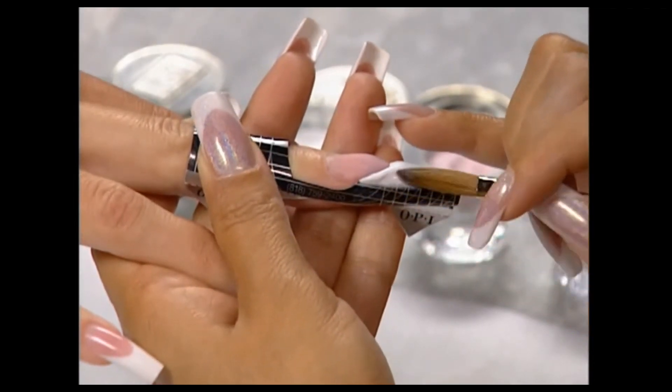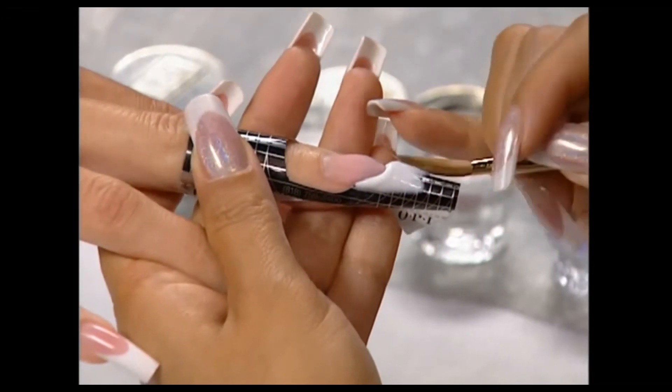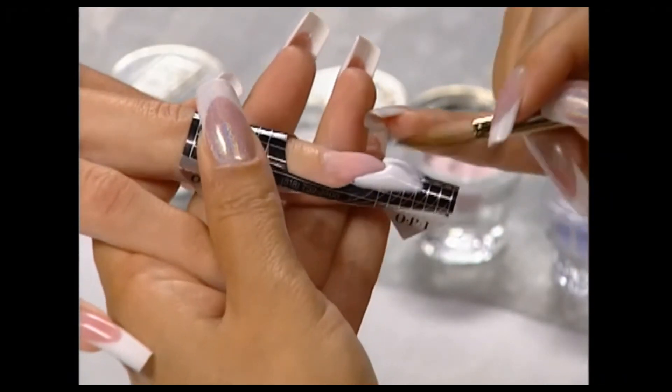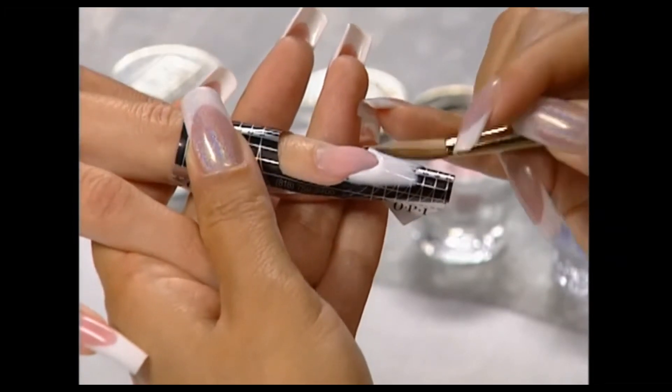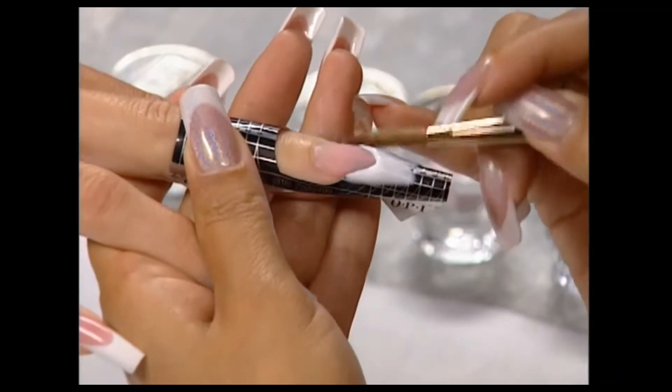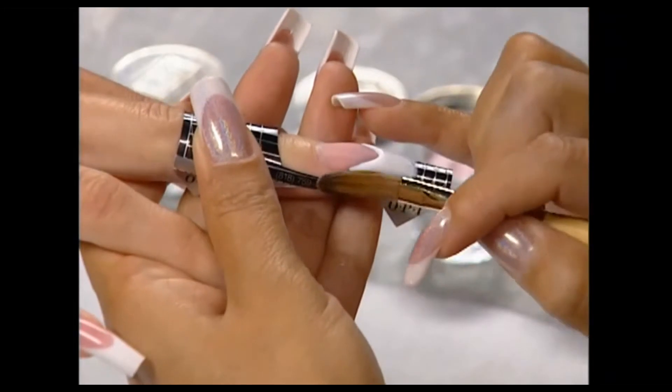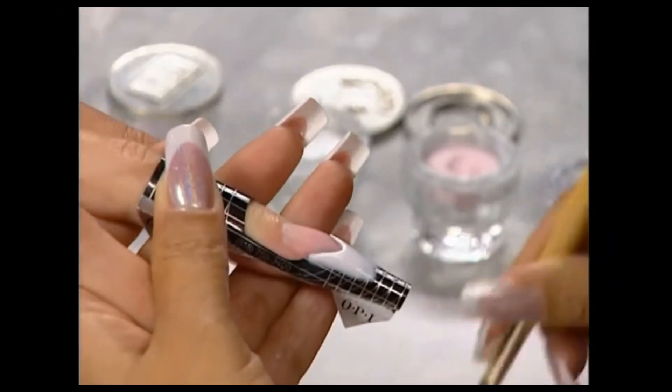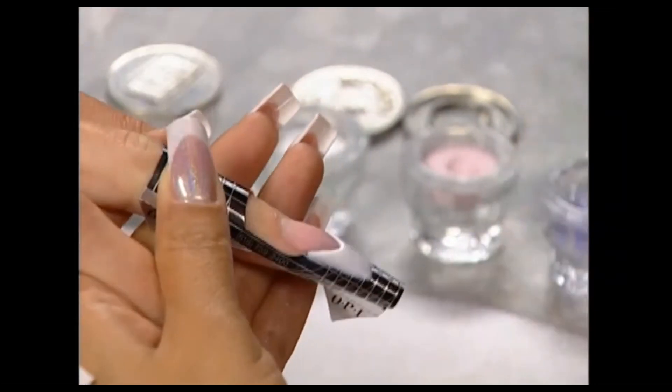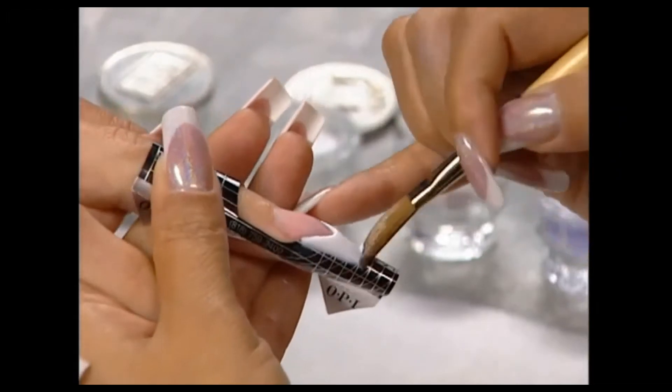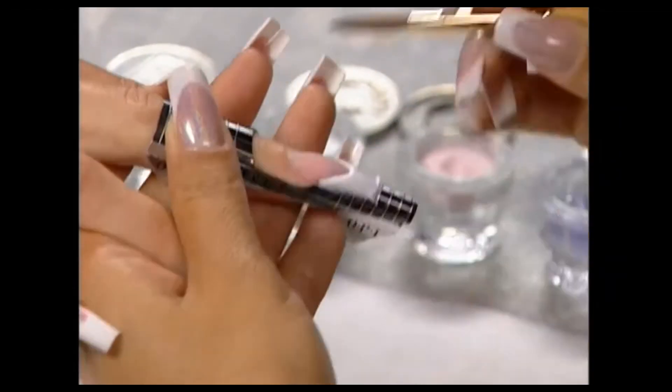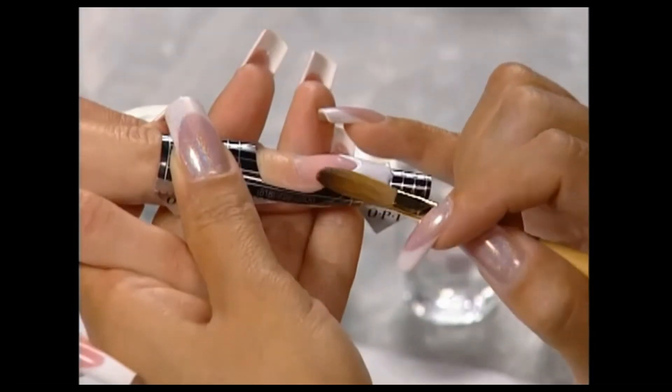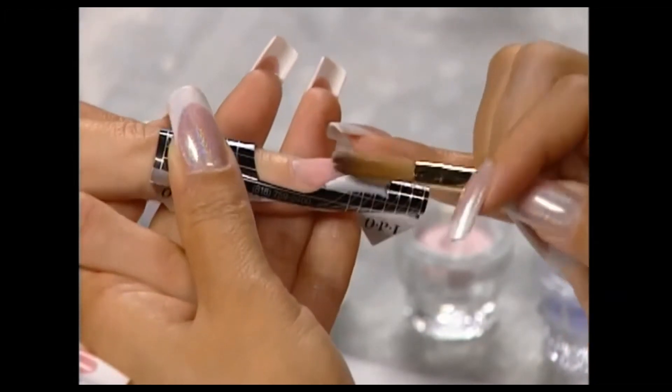Press the white acrylic back to tuck up against the pink and form the smile line, then begin to shape the free edge. Invert the brush and use the tip to refine the smile line, then push the product back from the free edge to form a clean line at the desired thickness and length. Use brush pressure to smooth the free edge from side to side.